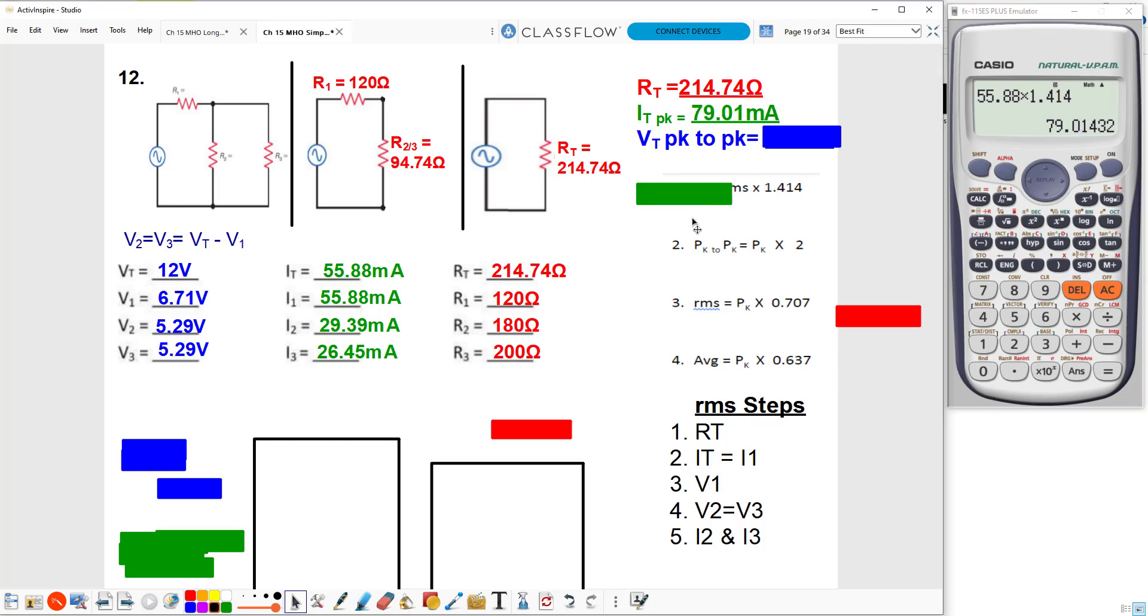Now I need VT peak to peak. I have my VT RMS value of 12 volts times 1.414, that brings it up to my VT peak, and now I just simply need to find peak to peak. I just need to take the peak value that I just calculated times two, so I'll say times two equals 33.944 volts for my VT peak to peak.